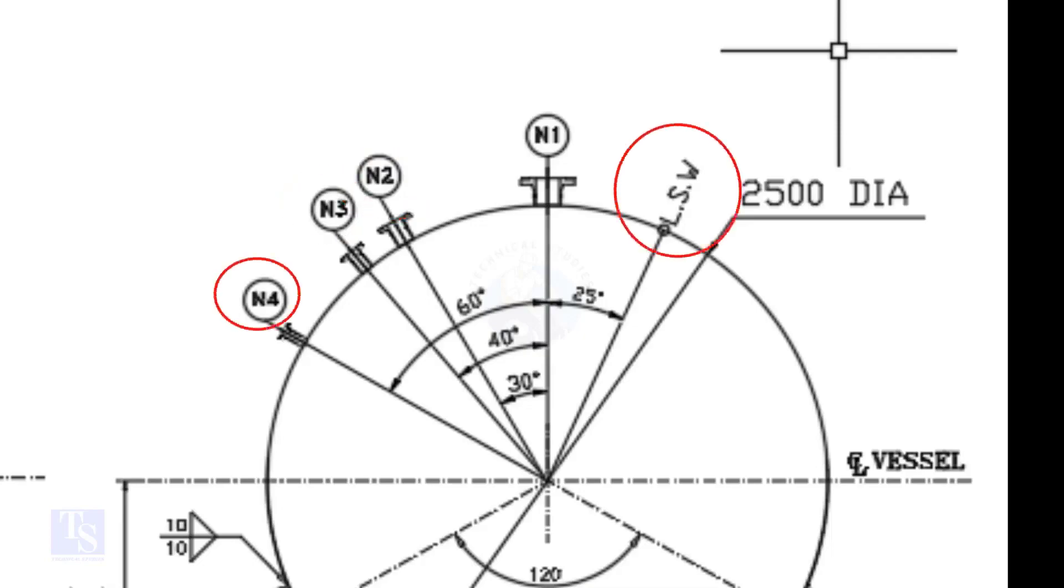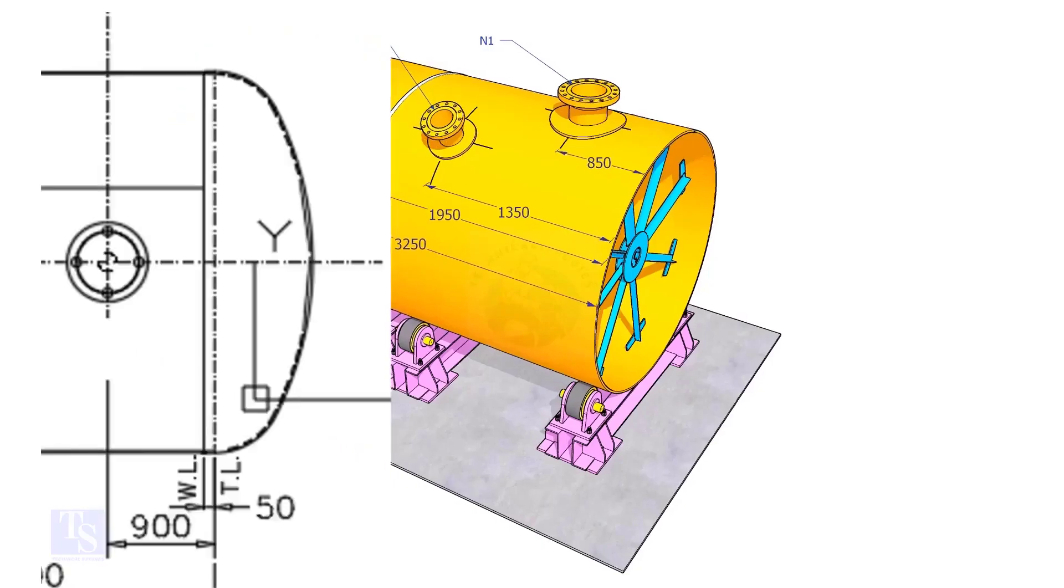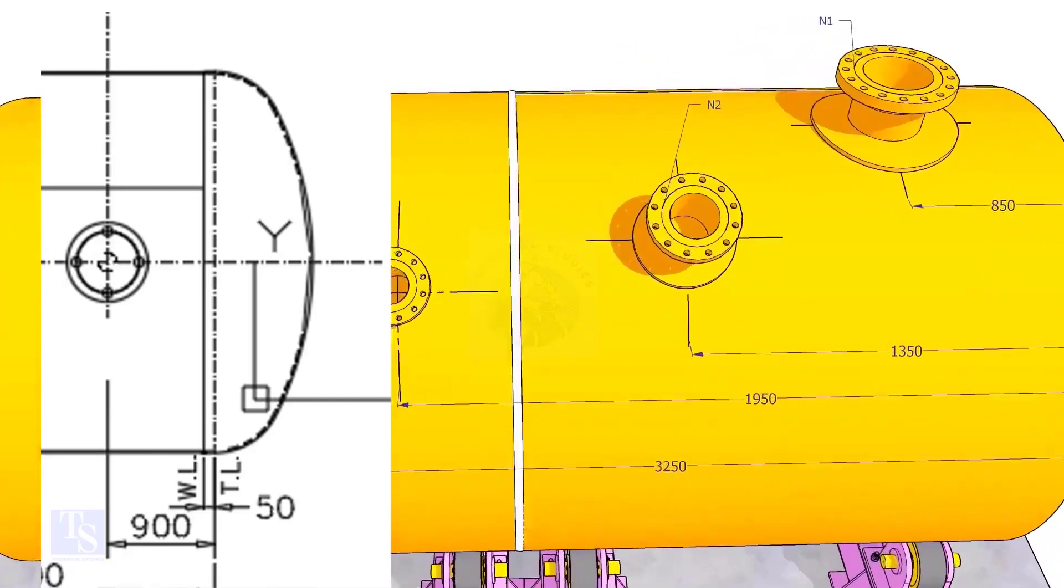Nozzle N1 is turned 25 degree from LSW. As the straight face 50 millimeters is on the dish end, we need to subtract 50 millimeters from the overall dimension.